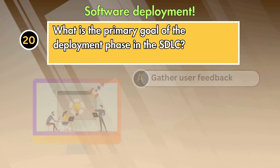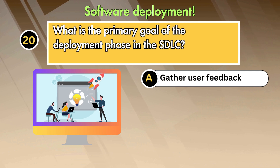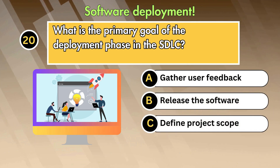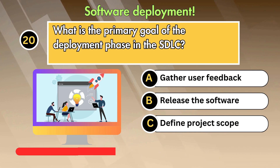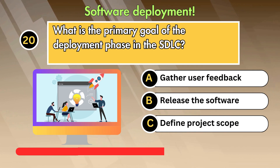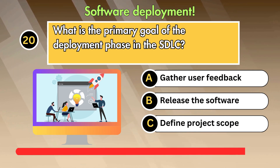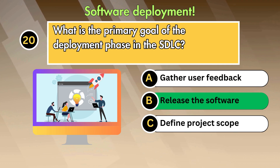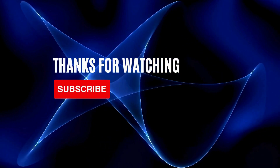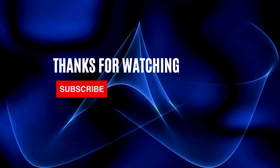Question 20: What is the primary goal of the deployment phase in the SDLC? Option 1: Gather user feedback. Option 2: Release the software. Option 3: Define project scope. Answer is: Release the software.